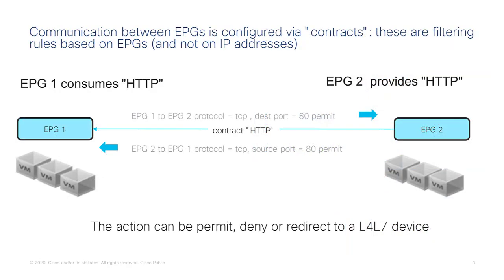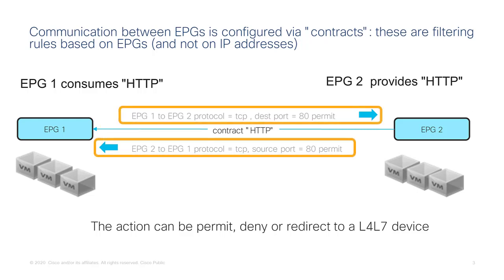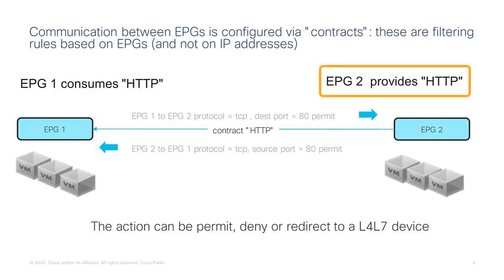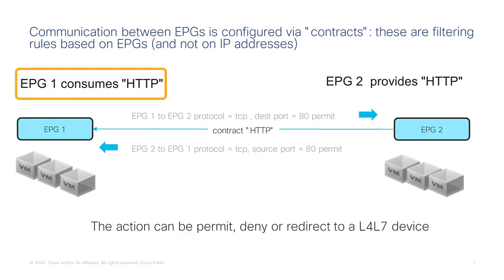So what is a contract? A contract is like an ACL, but the difference is that it's not based on defining IP addresses — instead it's based on defining a pair of security zones and specifying which protocol and which ports are allowed to communicate. There is a provider configuration where one EPG is the provider of the contract, and a consumer configuration where each EPG can consume one or more contracts.